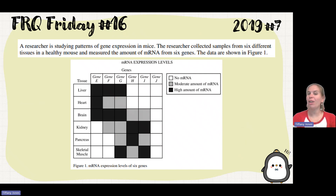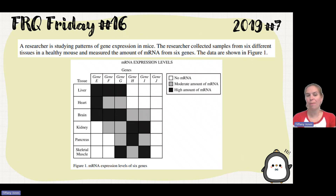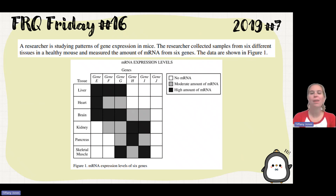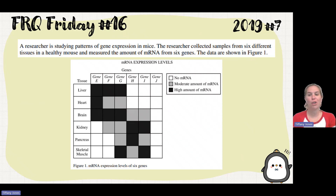Researchers studying patterns of gene expression in mice collected samples from six different tissues in a healthy mouse: the liver, the heart, the brain, kidney, fingers, and skeletal muscle, and measured the amount of mRNA from six different genes. The data is shown in Figure 1.